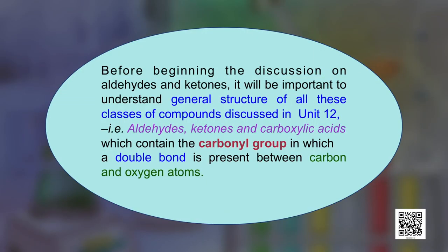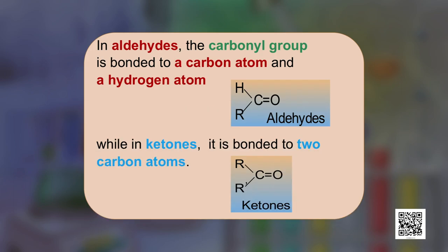Before beginning the discussion on aldehydes and ketones, it is important to understand the general structure of these classes of compounds discussed in this unit — aldehydes, ketones and carboxylic acids — which contain the carbonyl group in which a double bond is present between carbon and oxygen atoms. In aldehydes, the carbonyl group is bonded to a carbon atom and a hydrogen atom, while in ketones it is bonded to 2 carbon atoms.